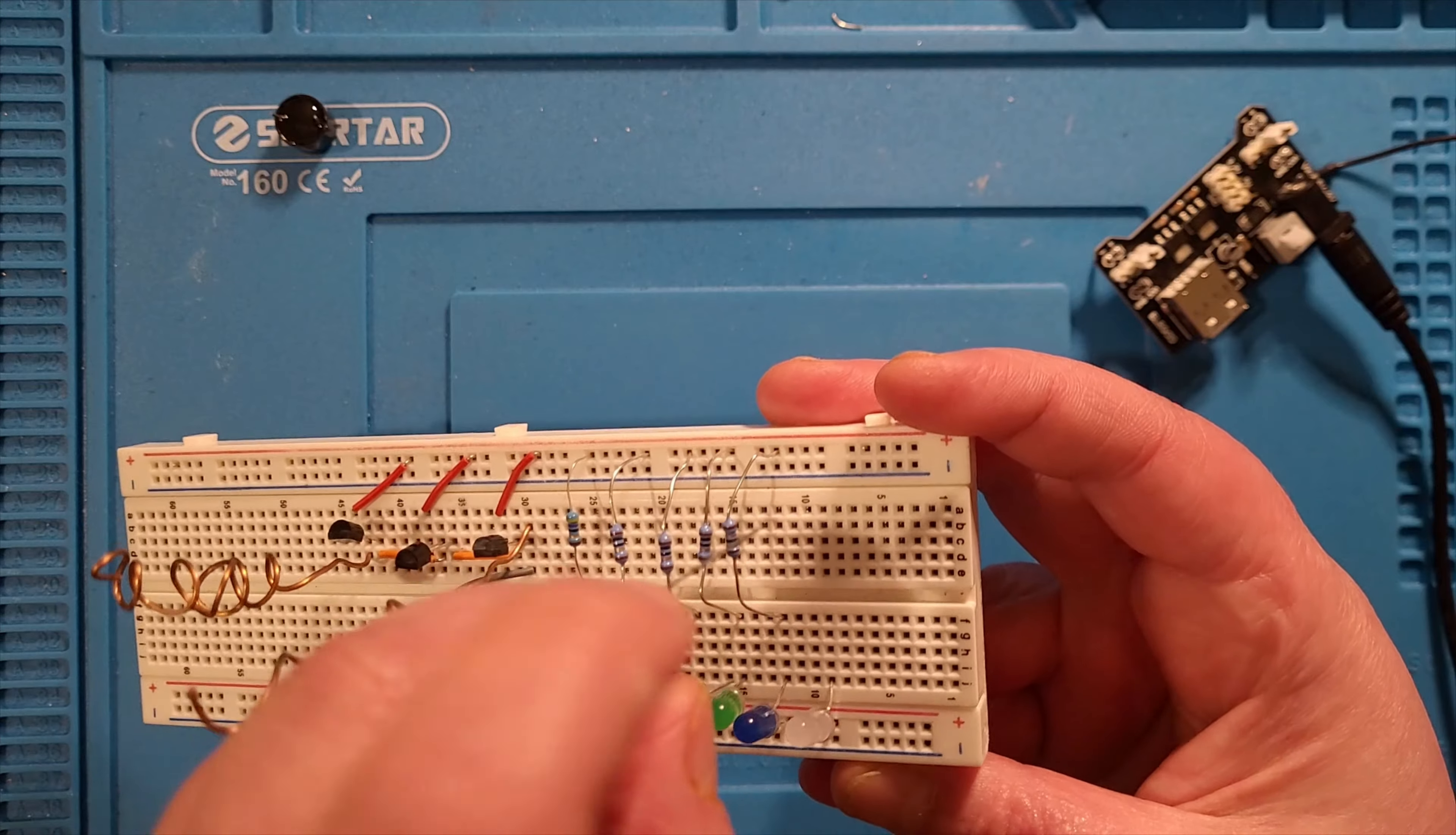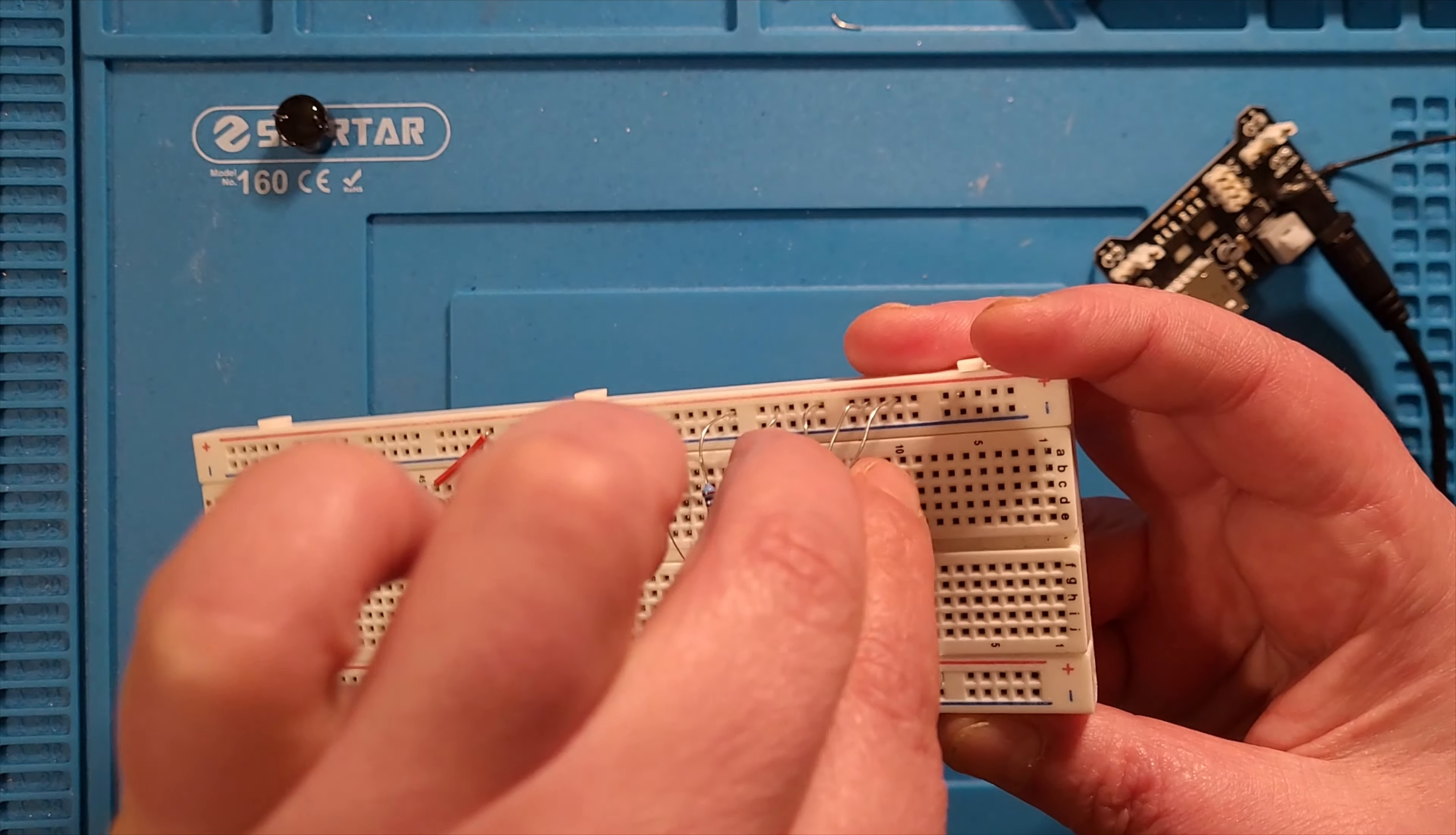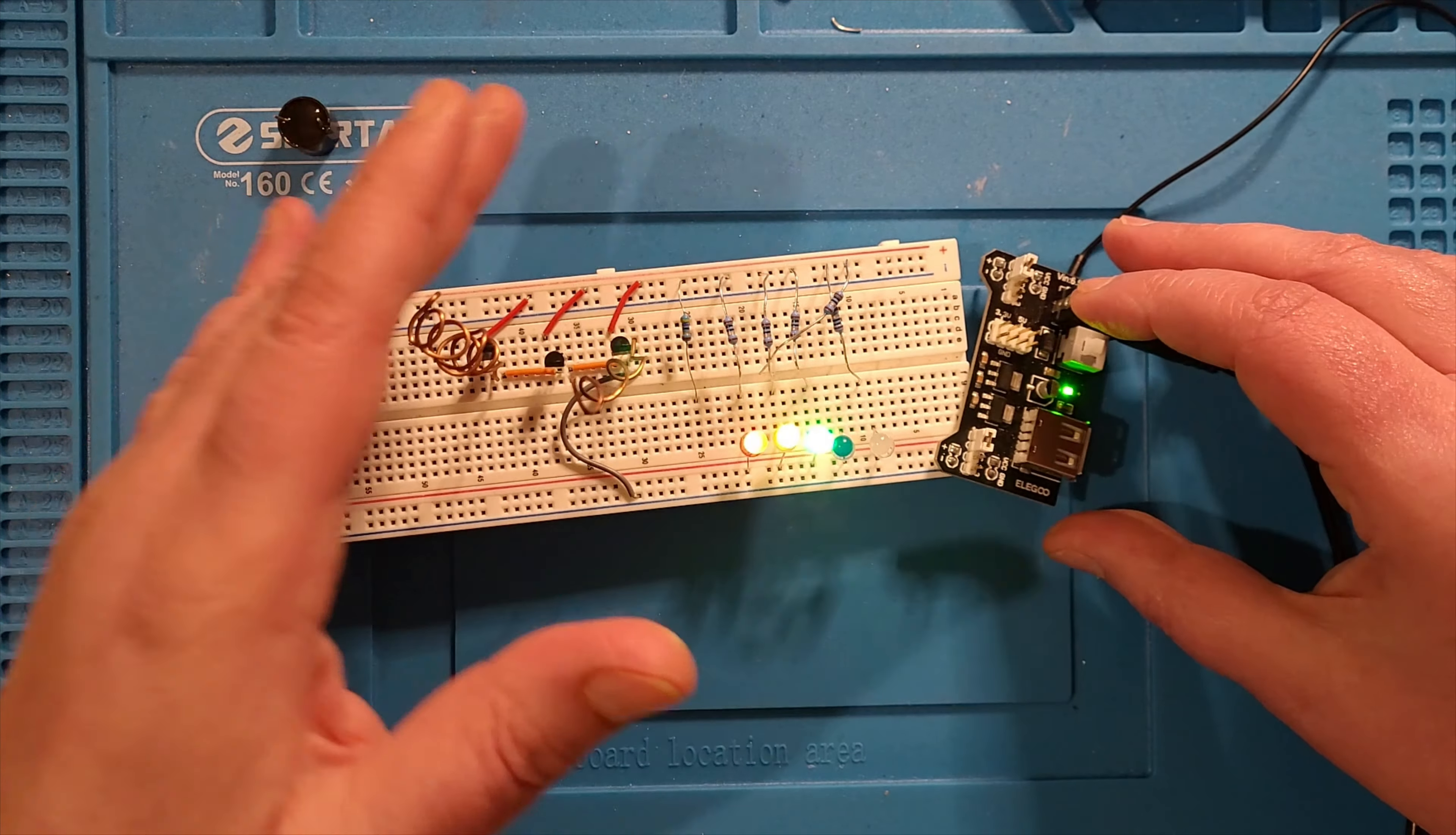Then I'll take the 10 ohm resistor and just plug that in as well. That needs to go from the collector rail—remember all the collectors are connected, and so are all the resistors.